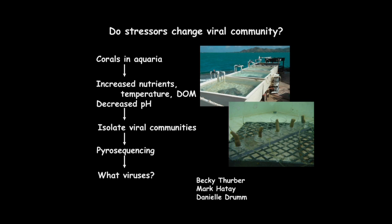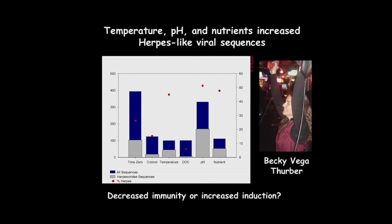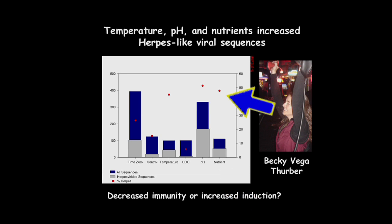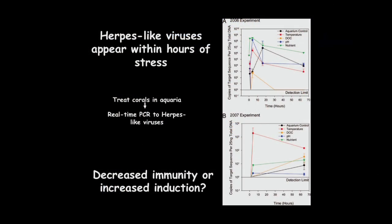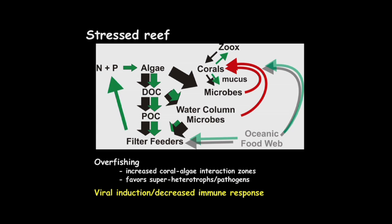We did the same experiment isolating viruses. The take-home is that three of the stressors — temperature, pH, and nutrients — actually induce more herpes viruses to be associated with the coral. These are herpes viruses already living in the coral — just like in humans where herpes viruses emerge when you're stressed, that's what's happening here. When we stress corals with different stressors, we see more herpes viruses within hours — that's not reinfection, it's the ones already there coming out.